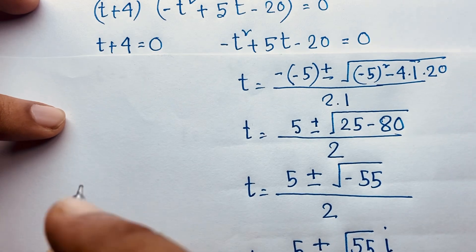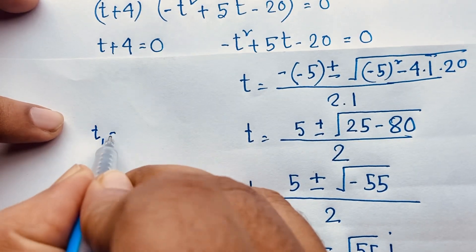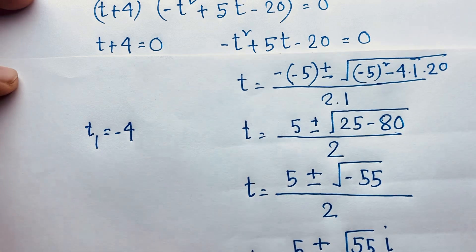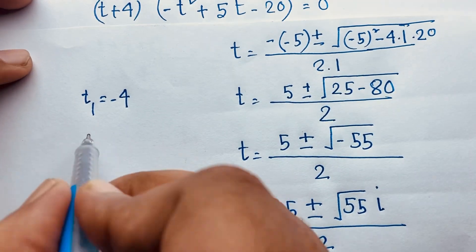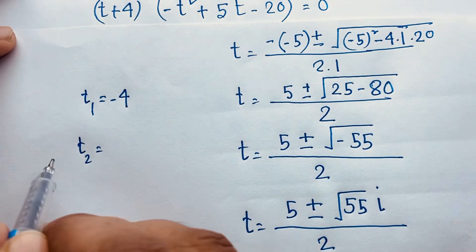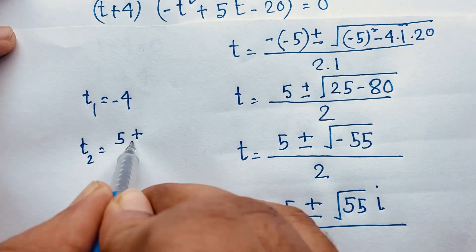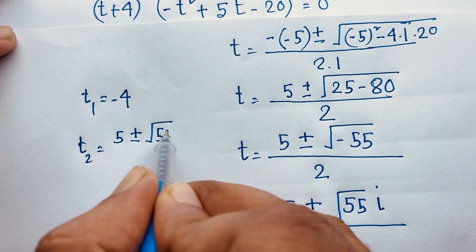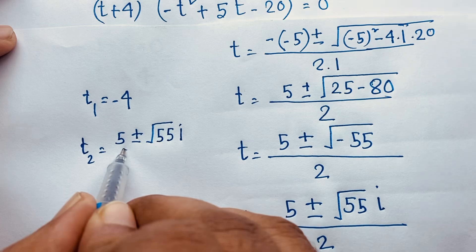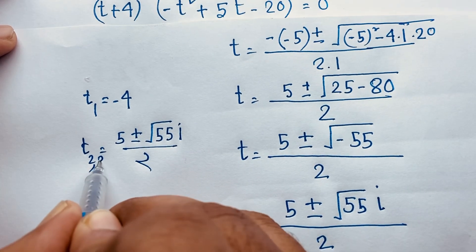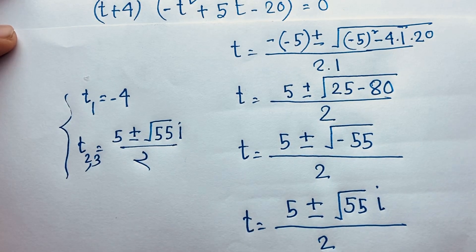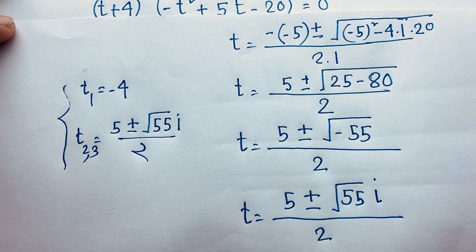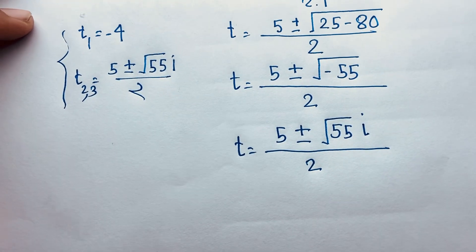Our final answers are: t₁ is equal to negative 4, and t₂ is equal to 5 plus or minus square root of 55 times i, over 2. This is our final answer for this exponential math Olympiad question.